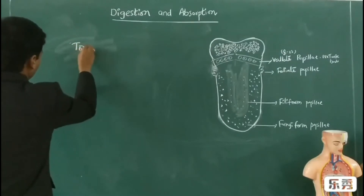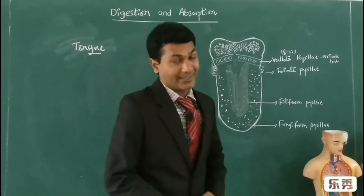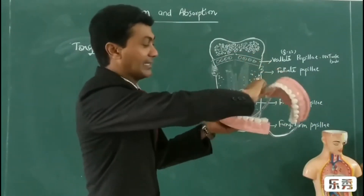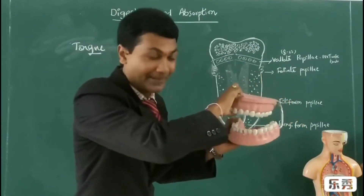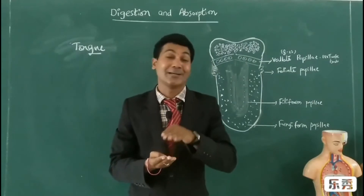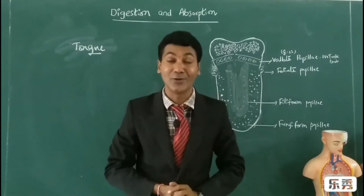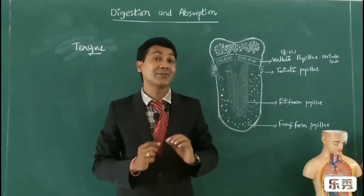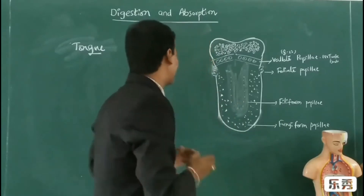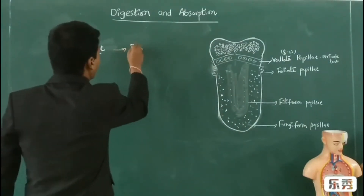So, the structure of the tongue. The tongue is present in the oral cavity. You can see when we open the mouth, this region is known as the oral cavity. The tongue is attached to the floor of the mouth in the oral cavity with a skinfold called the frenulum. The frenulum is a structure where the tongue is attached to the oral cavity. And the tongue has several projections called papillae.